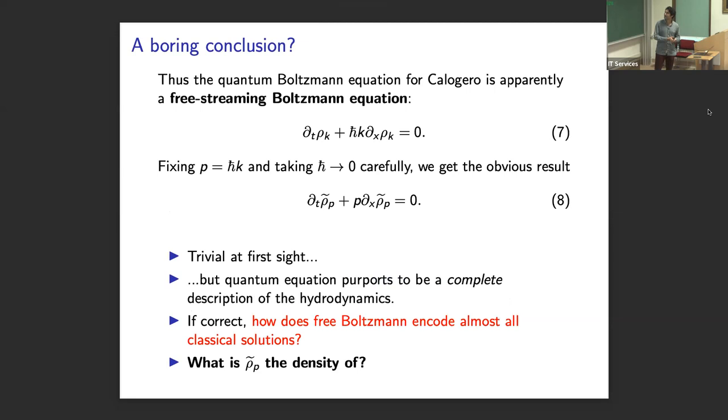which means that asymptotically, the particles behave as if they're free. And I can describe their thermodynamics as just tunable statistics. So what this implies eventually is that this interaction dressed velocity that we've heard about in soliton gases and integrable systems is actually just the bare velocity of the particles. So this whole soliton hydrodynamics becomes extremely trivial. And in fact, you come to the conclusion that the quantum Boltzmann equation for the Calogero model is apparently just the freely streaming Boltzmann equation that you learn about in the first course on condensed matter physics.